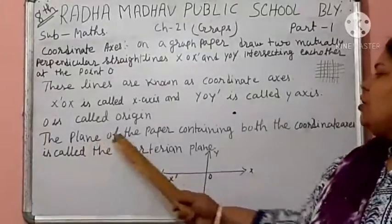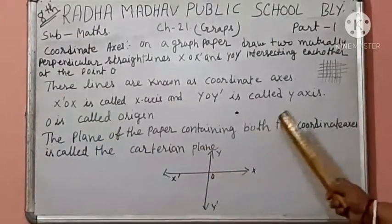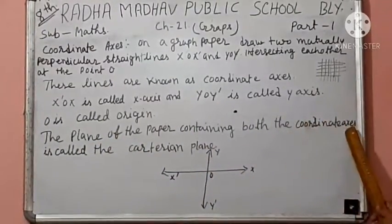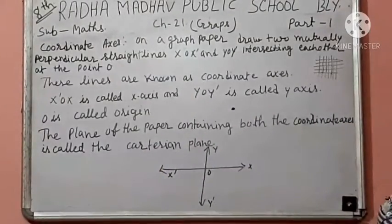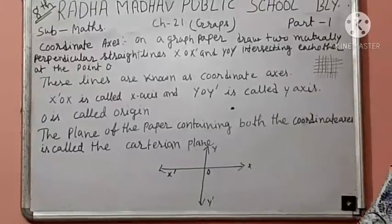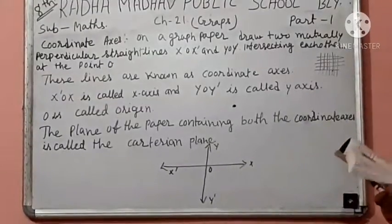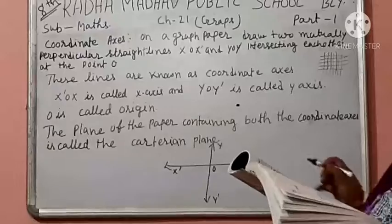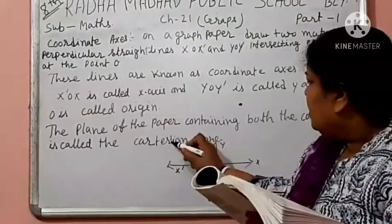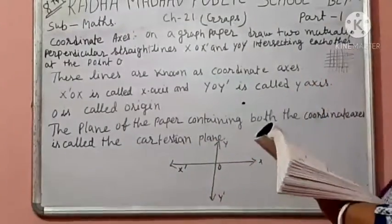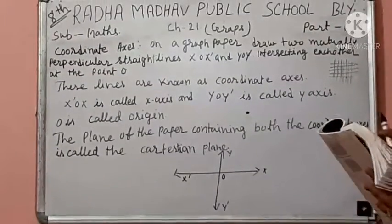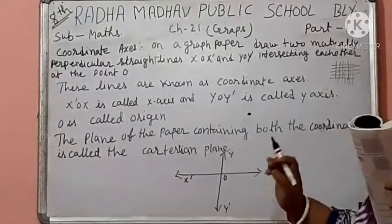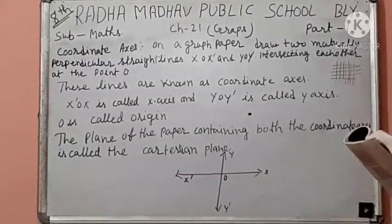The plane of the paper containing both the coordinate axes is called the Cartesian plane.